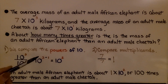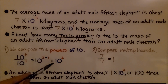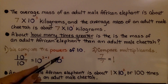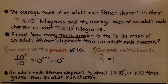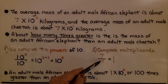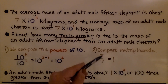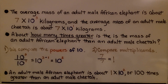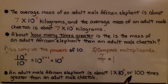We use the quotient rule and subtract. We have 10 raised to the 3 minus 1, which gives us 10 raised to the second power. Then we compare the multiplicands — they both have 7, so 7 over 7 equals 1. An adult male African elephant is about 1 times 10 to the second power, or 100 times greater than an adult male cheetah.